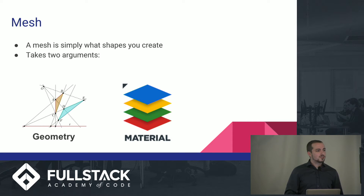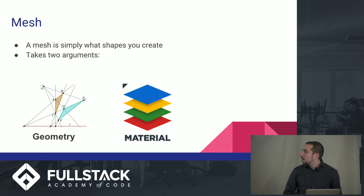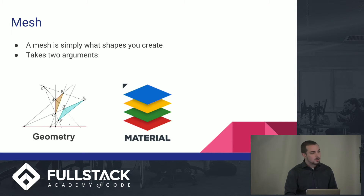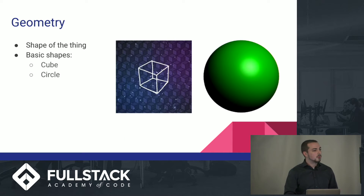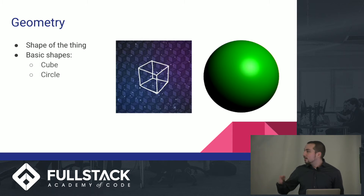So let's go over what a mesh is. A mesh is just an object — it is a cube, a cone, a sphere, whatever. It's going to take two arguments: you're going to have a geometry, and you're going to have a material. So first, we have geometry. What's that? It's the shape. Whatever shape you want to make, that's the argument you put in.